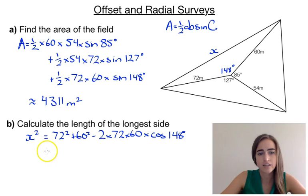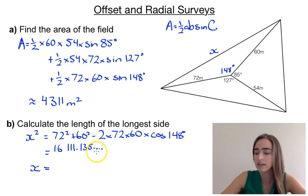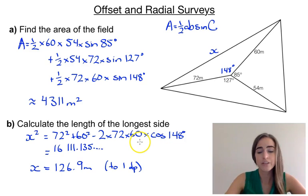So if we put this bit in your calculator, we get 16,111.135 and it keeps going. Then to find x, so just to find the distance, we need to take the square root of that. And we'll end up with about 126.9 metres to 1 decimal place. So those are a few examples of offset and radial surveys. Thanks.